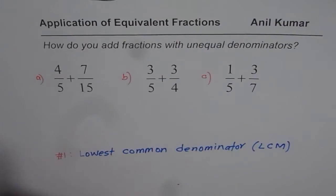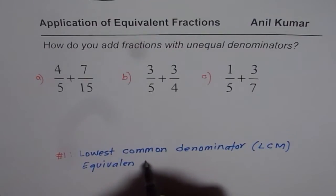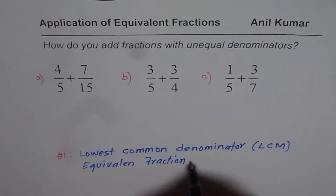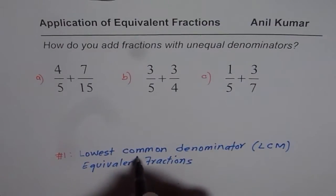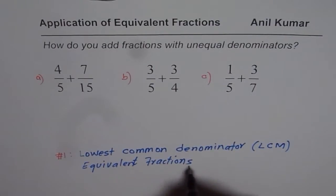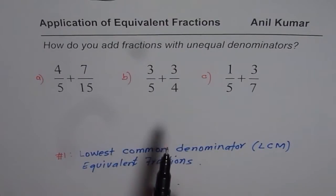So once you change the fraction, you write it as a different fraction. Remember, that different fraction is always an equivalent fraction. So what we get here is equivalent fractions and once you have equivalent fractions with same denominator, then you can add and subtract. So that is the whole idea. Now we'll study three different strategies to find common denominator.